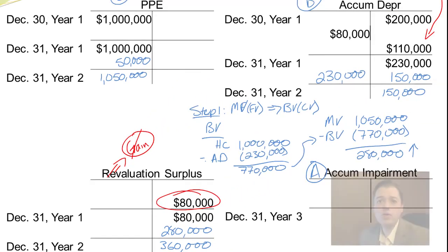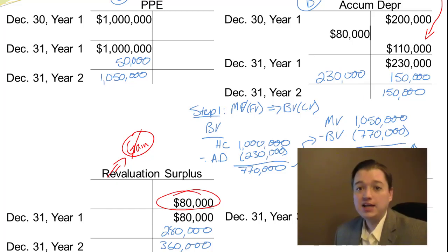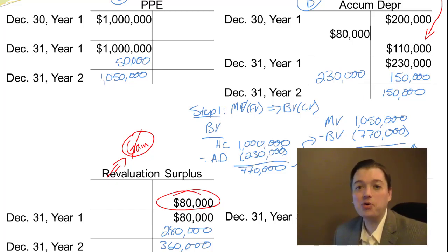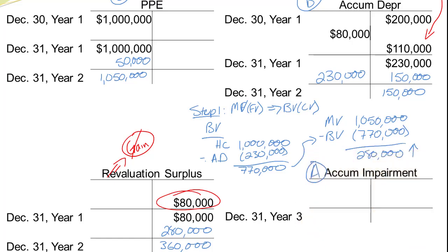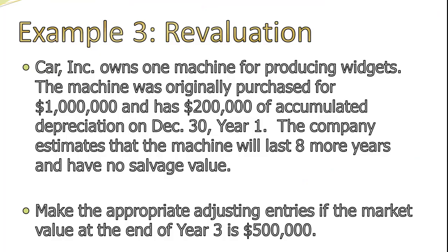Now let's do one more year — year three. In this case, things have gotten bad and the value has dropped to $500,000. Something has really happened to drop the value of this asset.